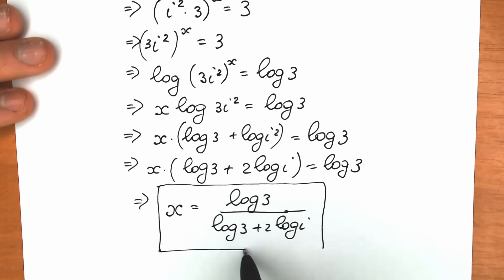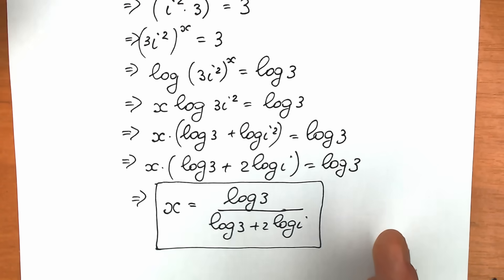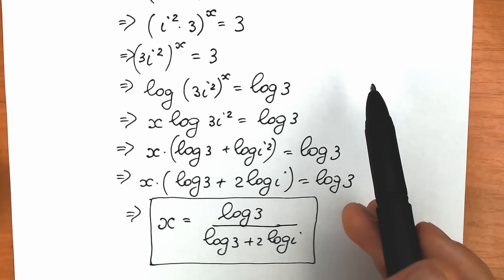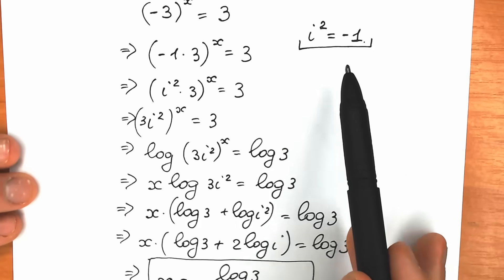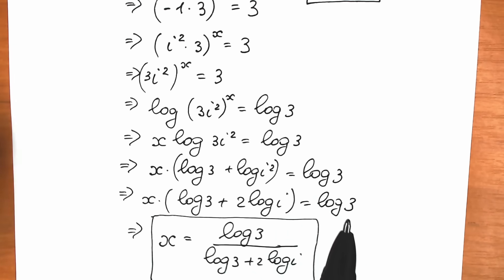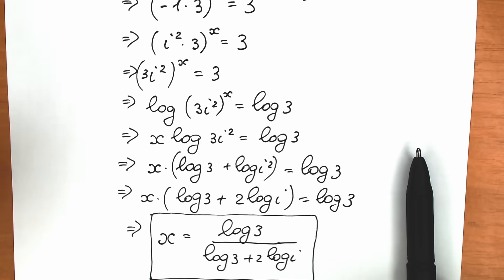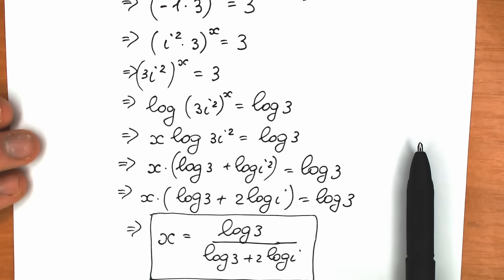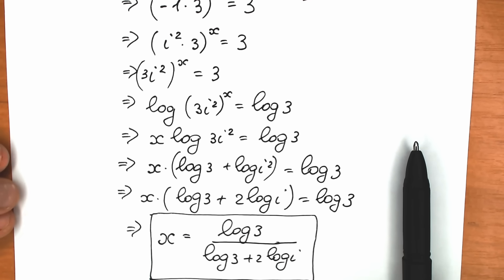I hope you understand and learned something new from these two methods. Write in the comments which method you prefer — the first one using Euler's identity, or the second one using the complex unit i². We can also look at a graph and see there are no points of intersection, confirming no real roots. Thank you for your time, write your questions in the comments, and see you in the next video. Have a great day!